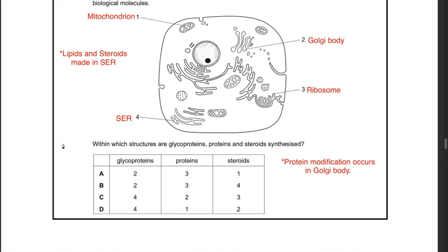The next question: within which structures are glycoproteins, proteins, and steroids synthesized? Glycoproteins are produced in the Golgi body, which processes and modifies proteins — for example, adding a sugar unit to form glycoproteins. Proteins are made at ribosomes attached to the endoplasmic reticulum (rough ER). Steroids are synthesized in the smooth endoplasmic reticulum. Glycoprotein should be structure 2, proteins are structure 3, and steroids are structure 4. The answer is B.